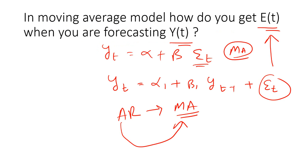The first question that somebody has asked me is, in moving average model how do you get E(t) when you are forecasting Y(t)? So E(t) stands for the error term. How do you get the error term in a moving average model? If you remember what a moving average model is, it takes a form something like this. So you are forecasting for Y(t) with the help of the error terms E(t), E(t-1), E(t-2) and so on, depending on the order of the MA series. Well, you get the error term by regressing Y(t) with Y(t-1).